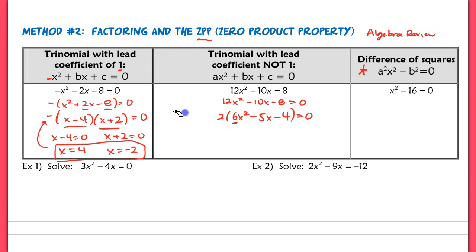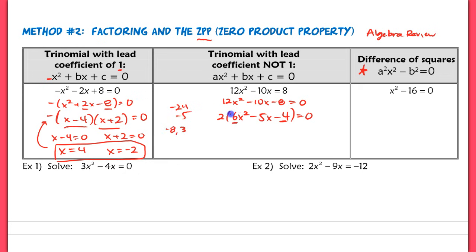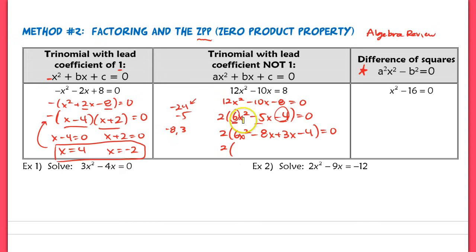This should be a 4 here. Two numbers that multiply to negative 24 and add up to negative 5 would be negative 8 and positive 3. To find those two numbers, I take 6 times negative 4 — that's how I got the 24. I'm going to split that up: keep the first term, split the middle term into negative 8x plus 3x, drop down the negative 4, and carry the 2 out in front. Make sure that stays out in front. Now you're going to factor by grouping — take these two terms and factor out the GCF.